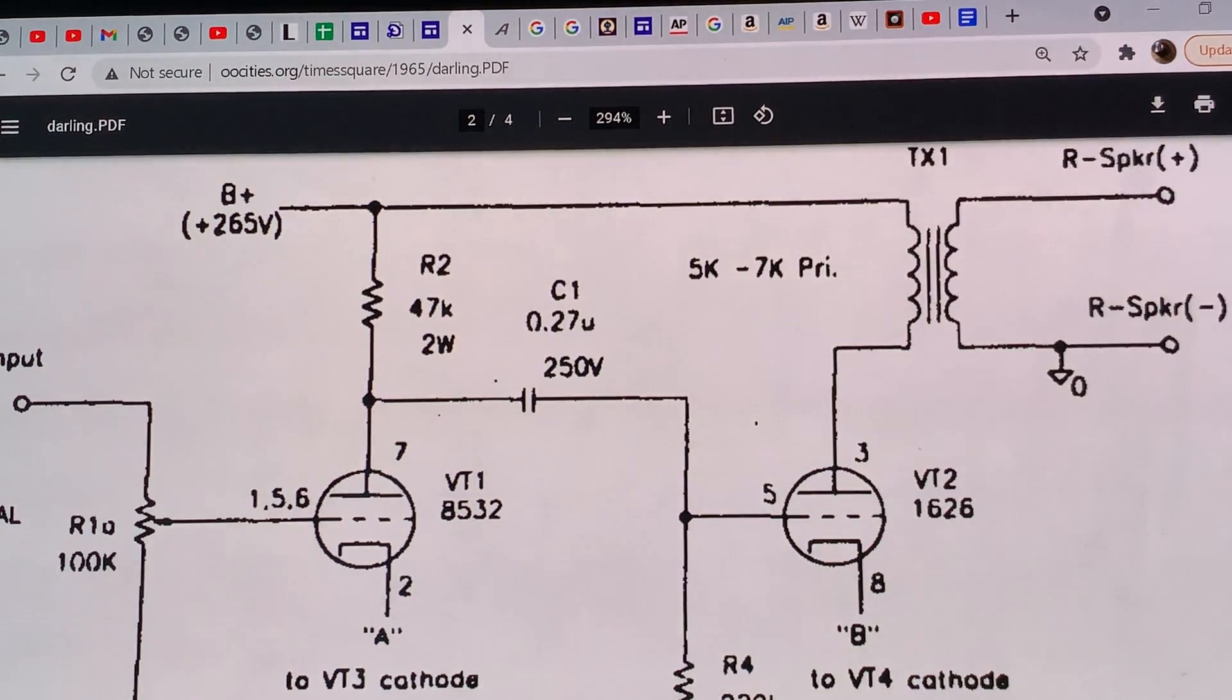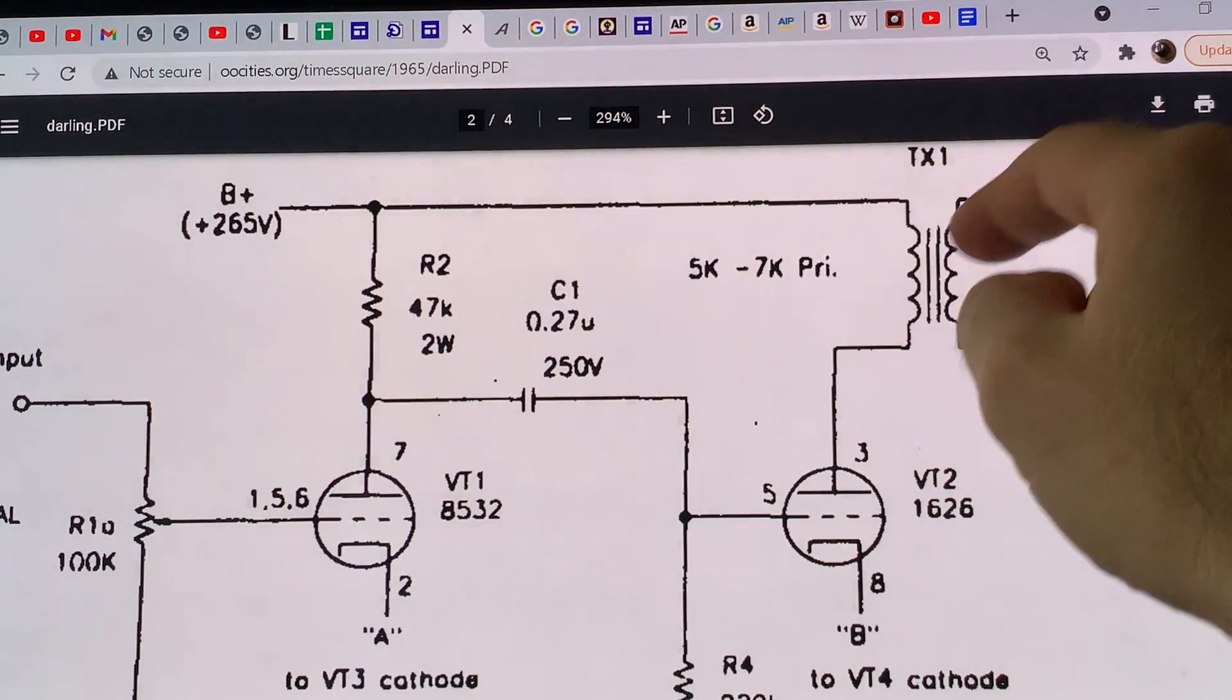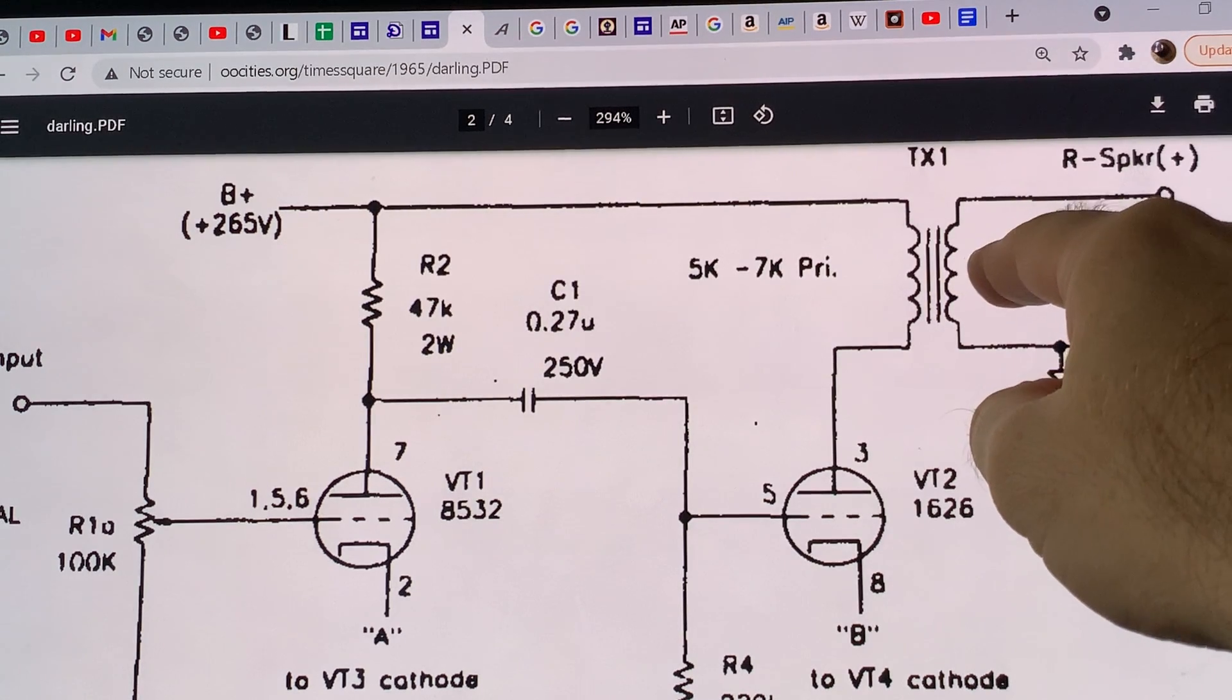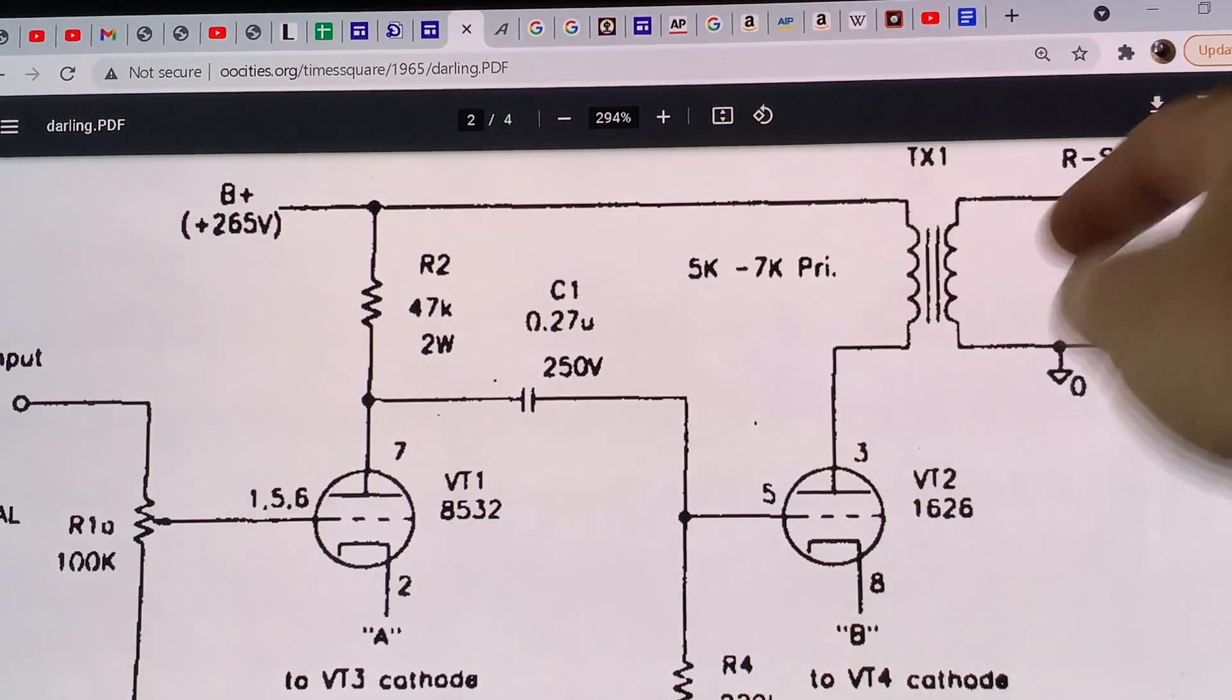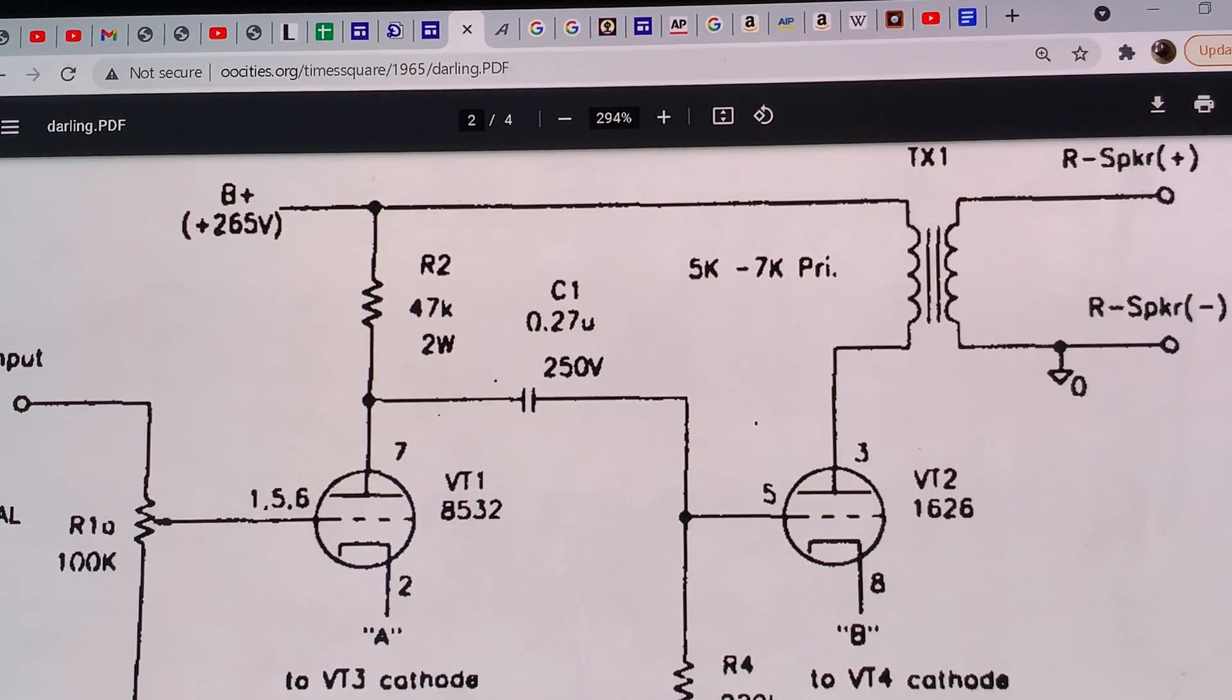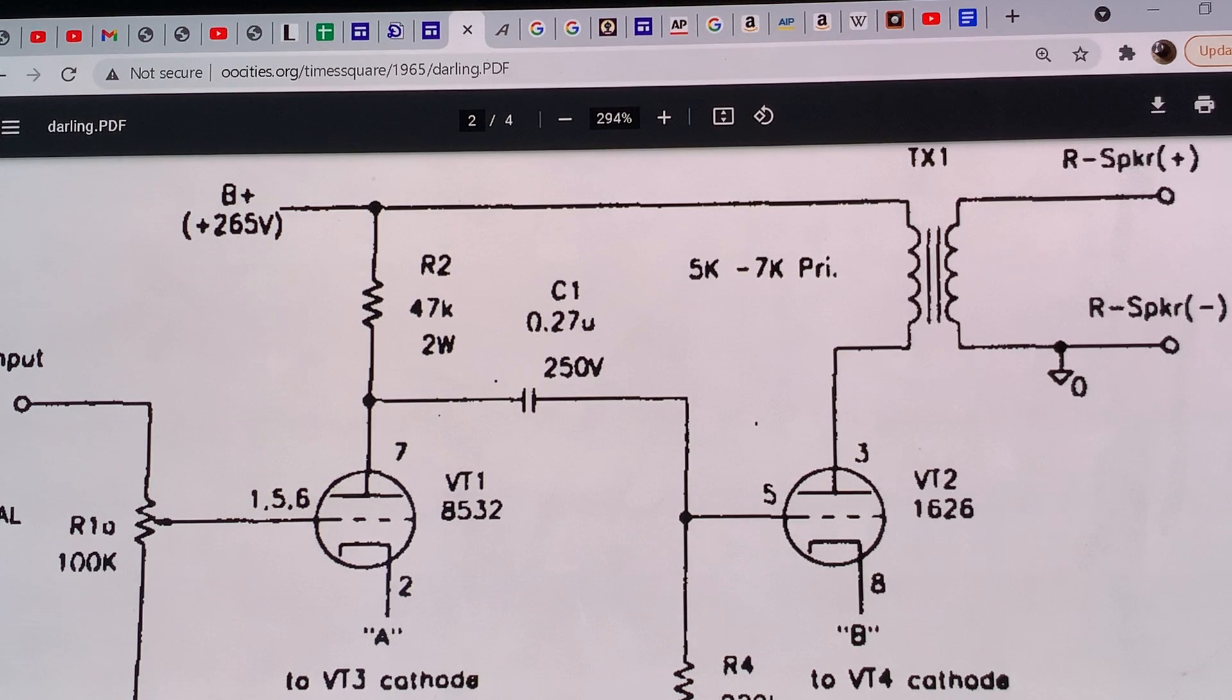That's where my output transformer video comes in, where I recommend you output transformers. I would really recommend not to use the cheapest Edcor that I suggested for $23 each, the tiniest Edcor, but go for the one size bigger Edcor, that's the 7.6k primary, and it's the $30-something. If you want an amplifier, if possible, try to use that as the lowest quality option possible.